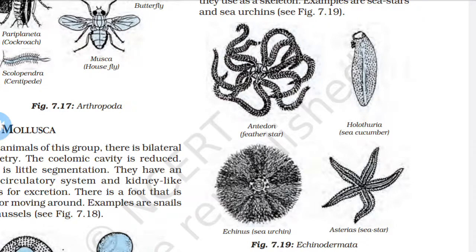Next we discuss Echinodermata. This is a Greek word: 'echino' means spiny, like a hedgehog, and 'derma' means skin. So these are spiny-skin organisms.